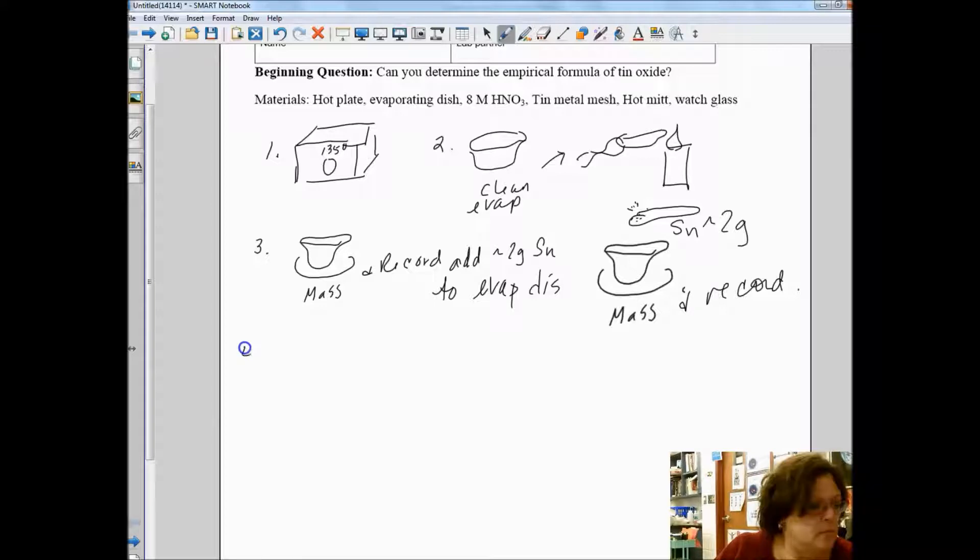Step four, you're going to take the evaporating dish to the fume hood with the tin in it, and we're going to add five milliliters of nitric acid. This is a very strong acid, so you're going to have to be very careful when you're adding it.